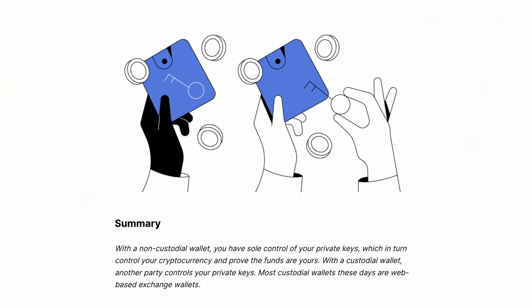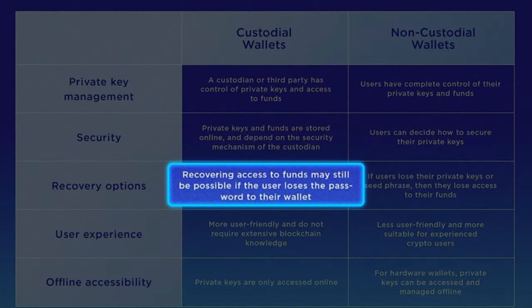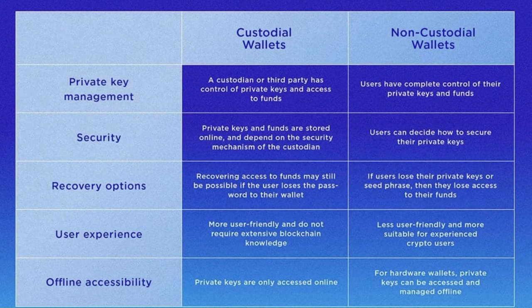On the other end of the spectrum, the most convenient way to store your private key is through a custodial wallet like Coinbase. Coinbase holds your private key for you, so they technically own your account, and you log in with your username and password. This is good because you only need your password to access your key quickly, and if you forget it, Coinbase customer service can help you recover your account. With a paper wallet, if you lose your private key, your Bitcoin is gone forever.